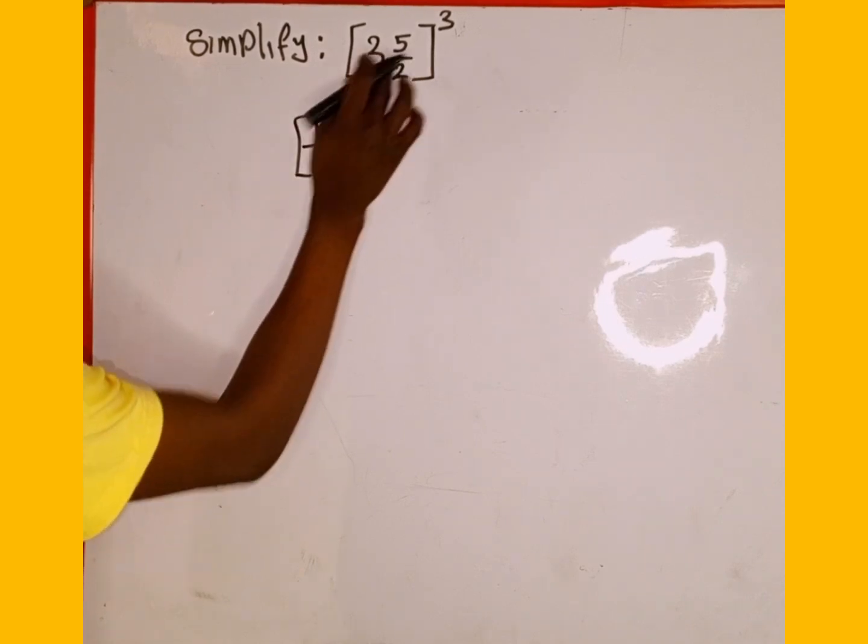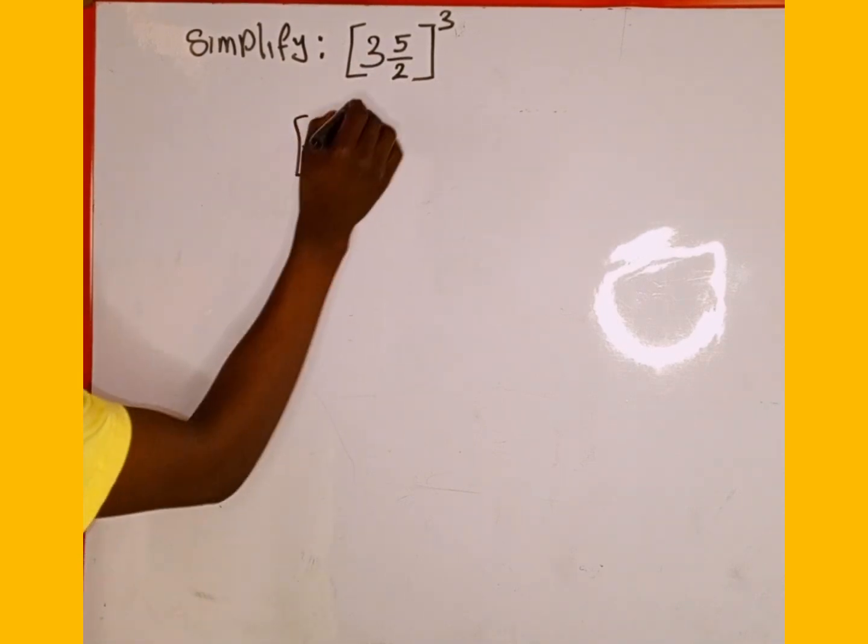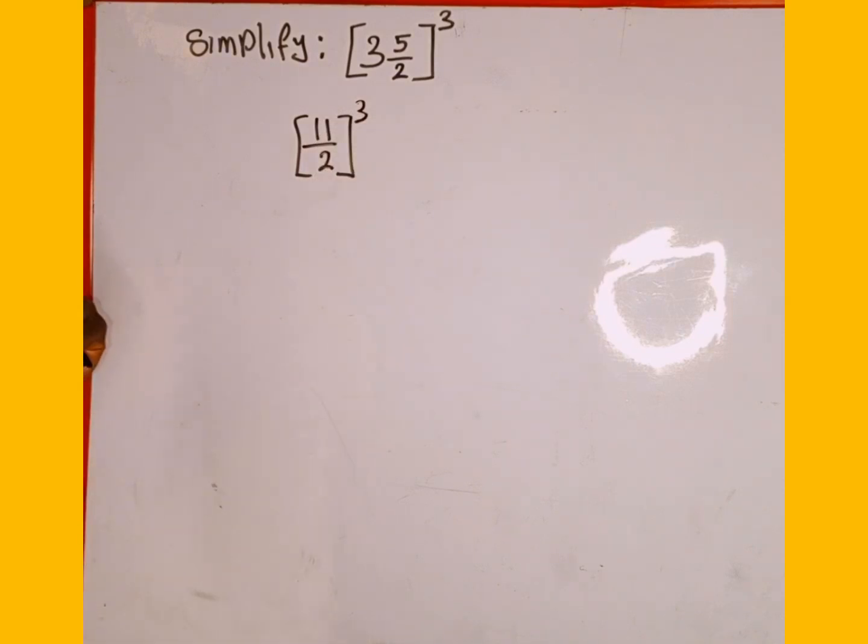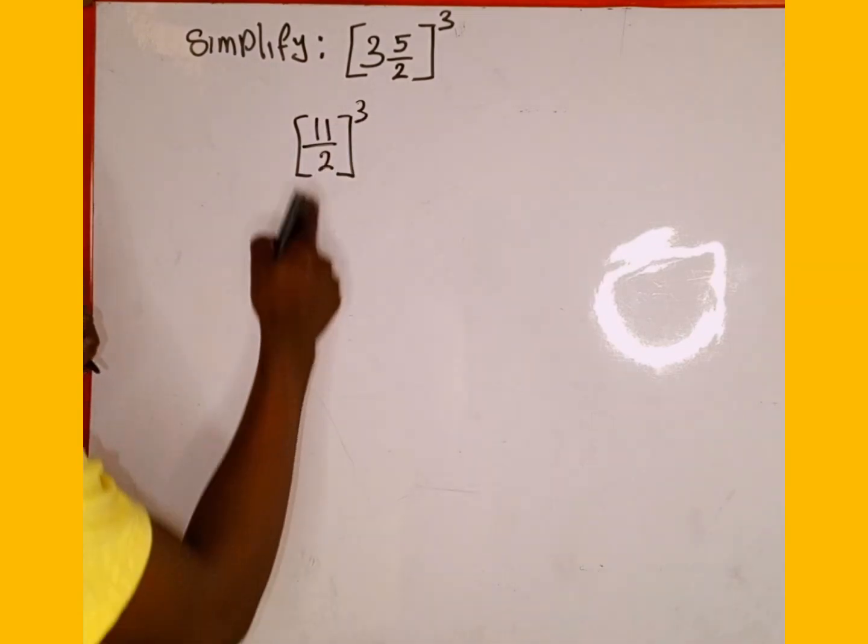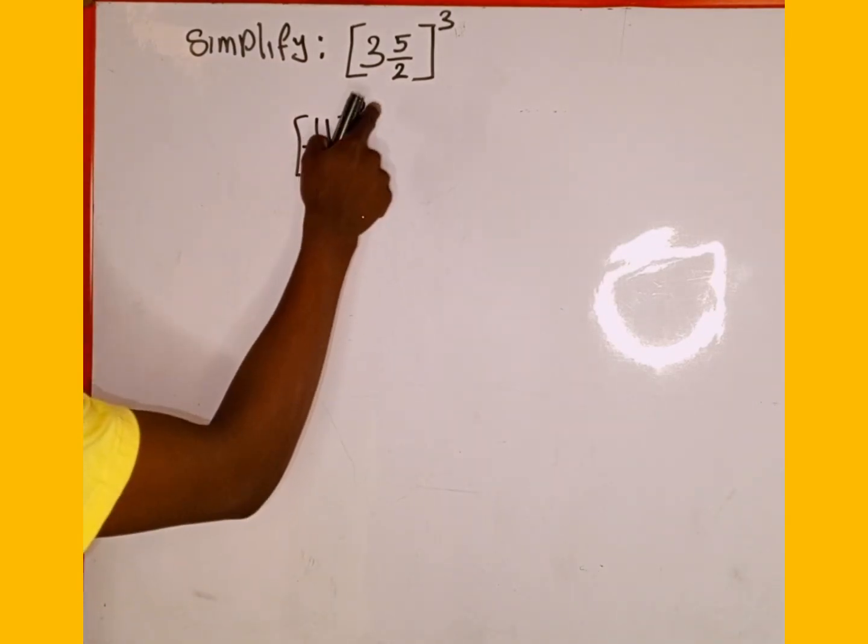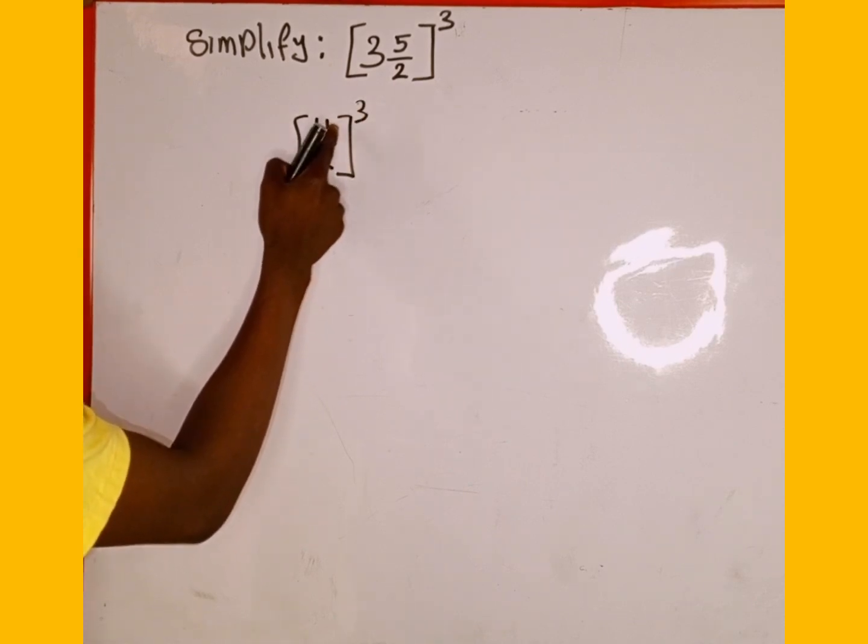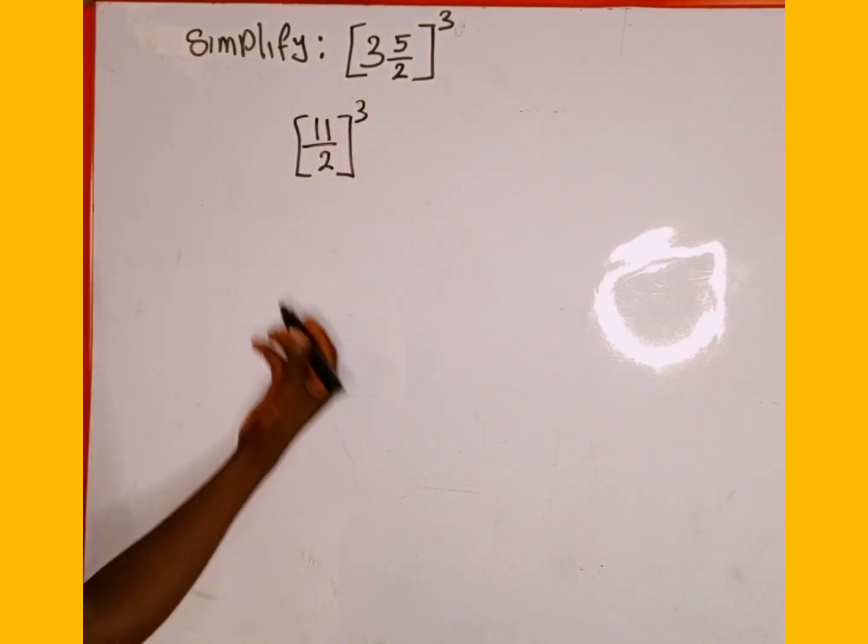So we have converted this inside the bracket to improper fraction, then all is raised to the power of 3. Then according to law of indices, when a fraction is raised to the power of a number, the denominator and the numerator can share the power.